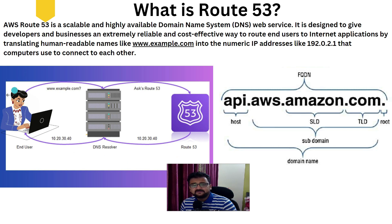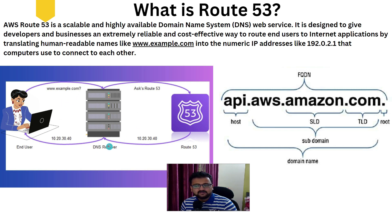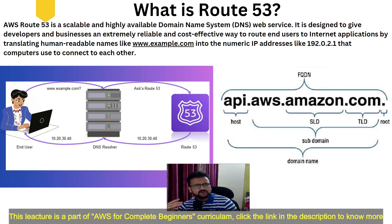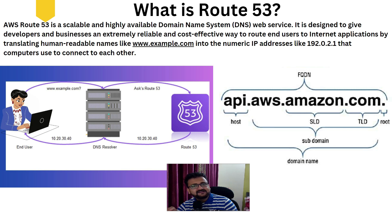As you can see in the diagram, if you are an end user and you want to reach a server, you won't be able to remember the IP address of the server because you are not a computer. So we use user-friendly names like google.com, microsoft.com, amazon.com. When you type that in your browser, a DNS resolver goes to Route 53 or any other DNS service — it could be on cloud or on-prem — and it returns the actual IP address you need to reach.